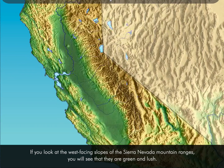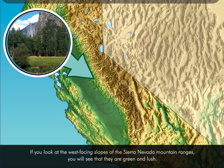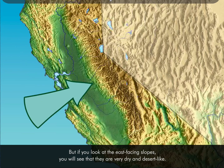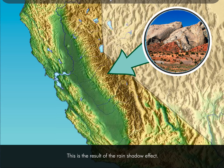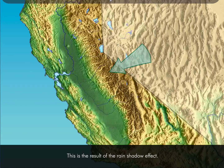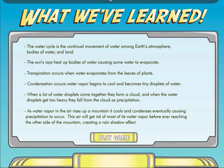If you look at the west-facing slopes of the Sierra Nevadas, you'll see that they are green and lush. But if you look at the east-facing slopes, you'll see that they are very dry and desert-like. This is the result of the rain shadow effect. Now let's review — try taking everything you've learned and see if you can recreate the water cycle!